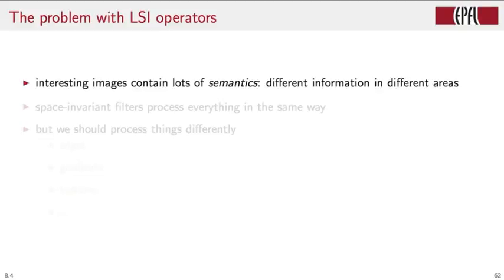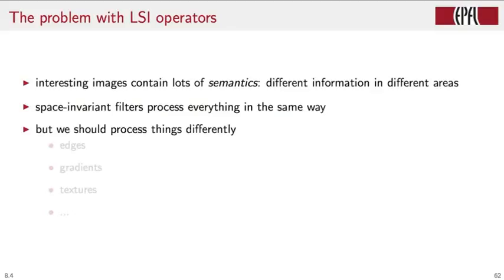However, when it comes to images, the problem with linear space-invariant operators is that images are a very specialized type of 2D signal. Images are designed to be interpreted by the human visual system, and as such they contain a lot of semantics, which is lost on simple operators such as filters. Consider the photograph of the scenery outside of your window — in the same picture, very many different things coexist: people, cars, buildings, maybe the sky, maybe some natural landscape. A space-invariant filter will process every item in the same way, but it is kind of intuitive that we would like different things to be processed differently.